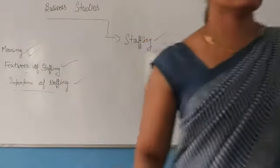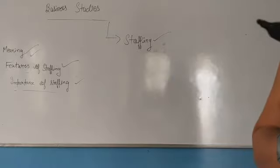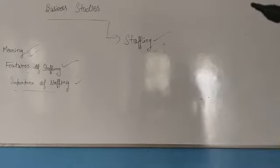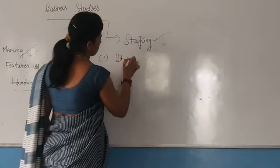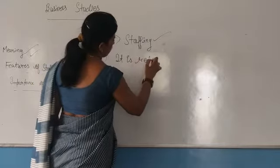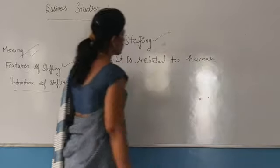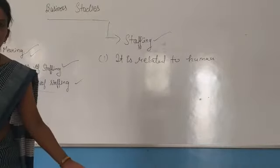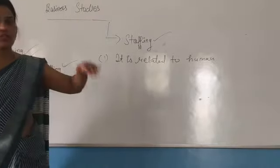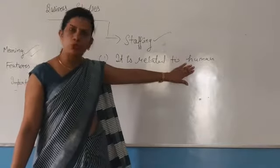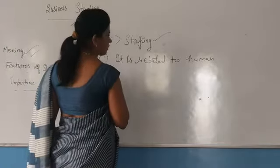Now we will discuss the features of staffing. What are the features of staffing? The first feature is that staffing is related to human beings. It means staffing is done for employees. It is not related to materials, it is not related to machines — it is related to employees, and employees are human beings. So this is an activity that is related to human beings.